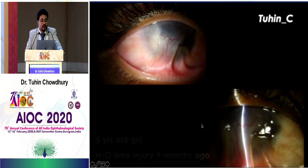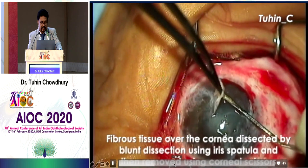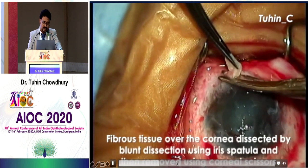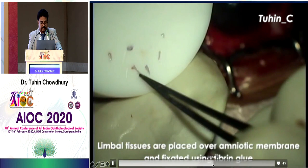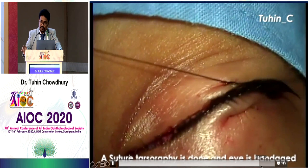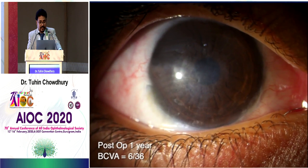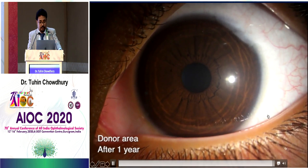Here is a patient — a nine-month-old child — referred from Assam, told that nothing could be done. After the SLET technique, in children we use a symblepharon ring or conformer. This is the picture at two weeks, at six weeks, and at one year — a dramatic improvement in the ocular surface.